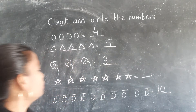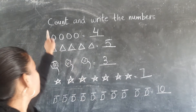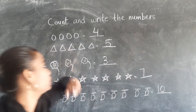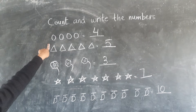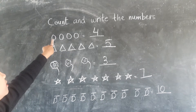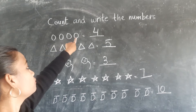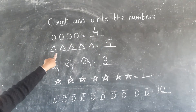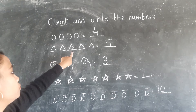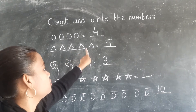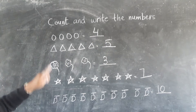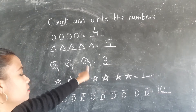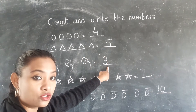Okay children, so let's repeat again. Count and write the numbers. Now first is circle. How many circles are there? 1, 2, 3, 4. So you have to write here, 4. Now next. 1, 2, 3, 4, 5. So you have to write here, 5. Now next. 1, 2, 3. So you have to write here, 3.